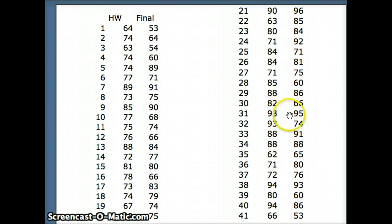We have their homework grade for a semester and their final exam grade for a semester. For the most part, high scores, 93 on the homework, corresponds to a 95 on the final. Low scores, 64 on the homework, corresponds to a 53 on the final. So we would expect there to be some kind of a positive correlation here in general.